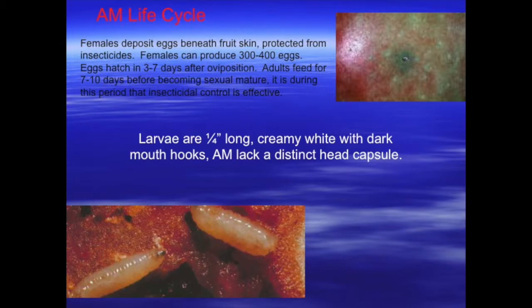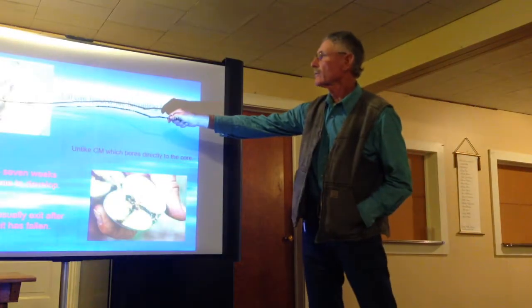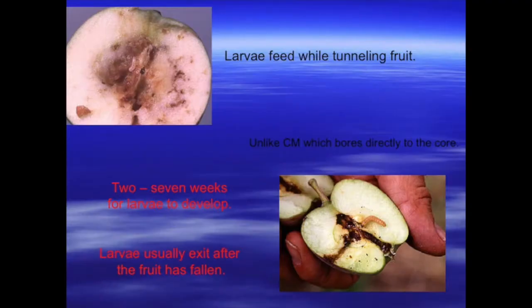The larvae are about a quarter of an inch long, pretty white, with dark mouth hooks. There's the maggot and the typical feeding. They wind tunnel around in the fruit. The fruit gets rotten and soft, and you can tell from the outside, it looks kind of crinkled.